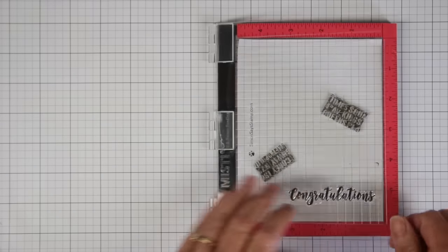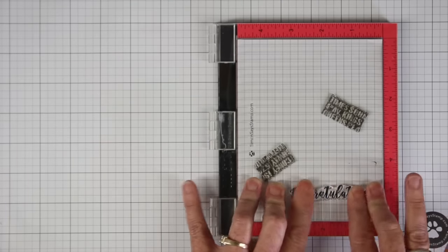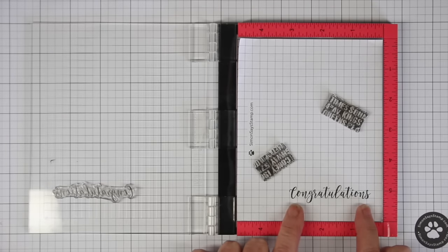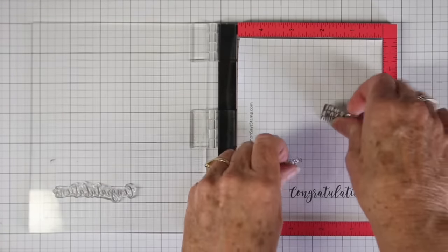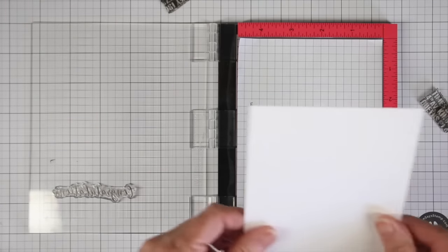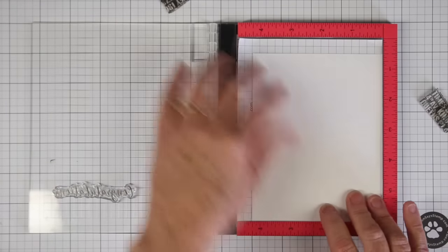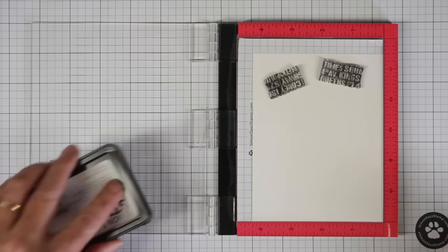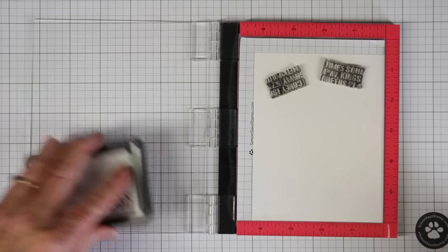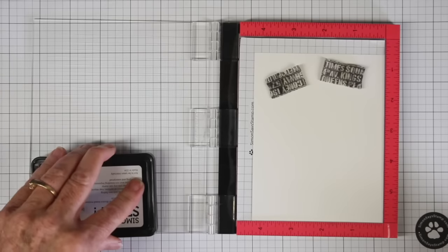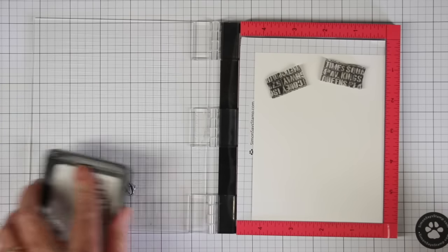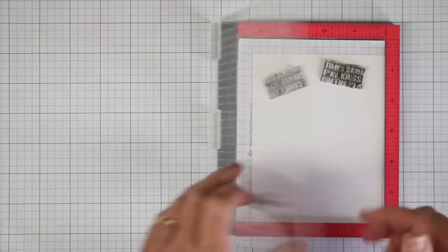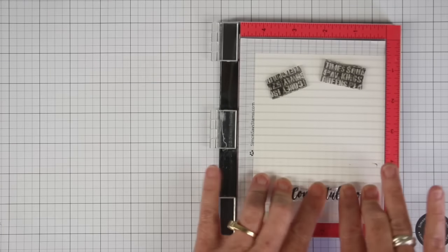So I'm going to go ahead and do a test run and I'm going to stamp right on to that grid paper. Now I can inspect how it's going to look on my card. If I need to do any adjustments, I can do it now before I stamp on my actual note card. So I'm going to go ahead and slide this in here just to show you how you can go ahead and use the grid paper under your card stock if you want to, as long as your ink has dried. And then you're going to go ahead and just re-ink that up.